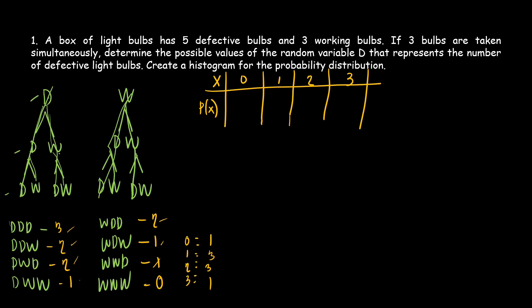We use fractions. The total number of outcomes is 8. So P(0) = 1/8, P(1) = 3/8, P(2) = 3/8, and P(3) = 1/8.